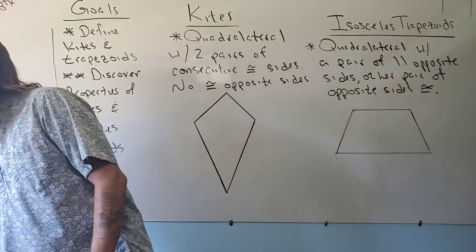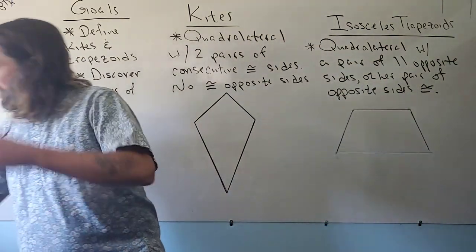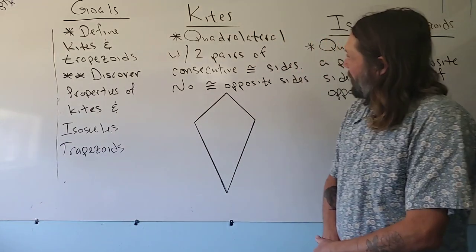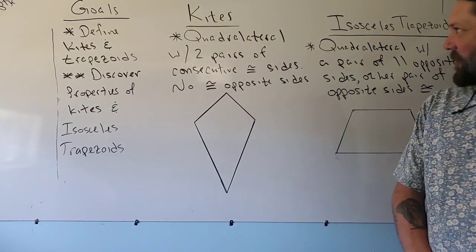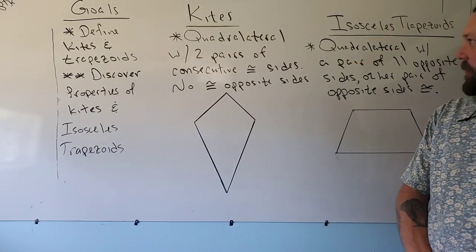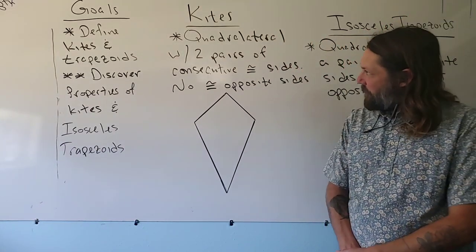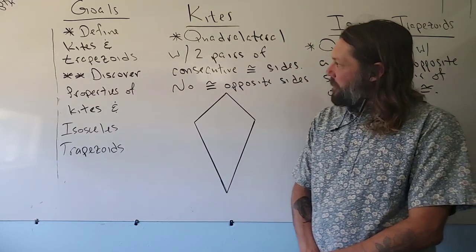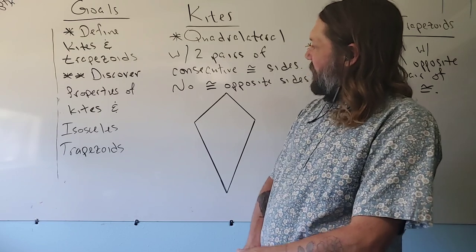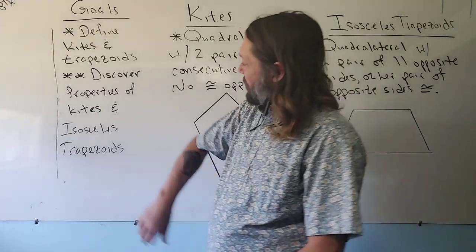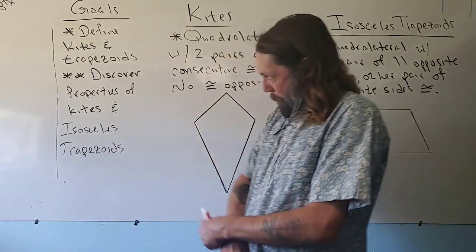The first goal that we're going to talk about today is we're going to define kites and trapezoids. Our second goal is going to be to discover properties of kites and isosceles trapezoids.